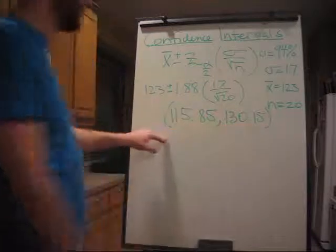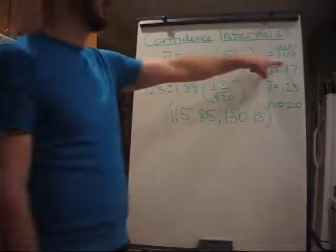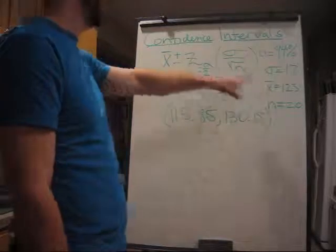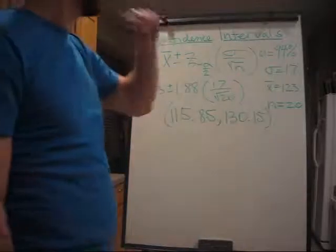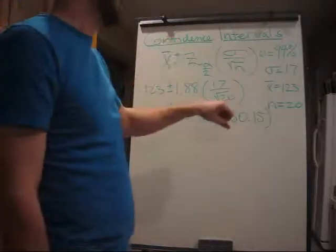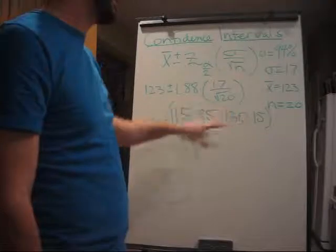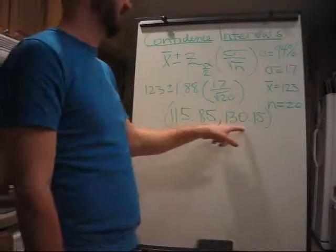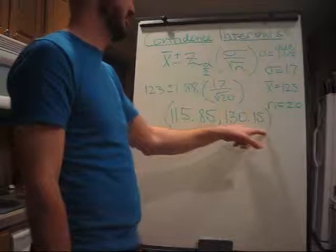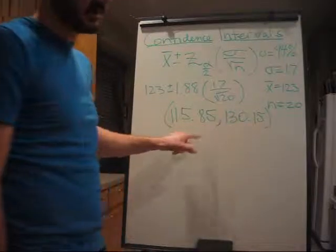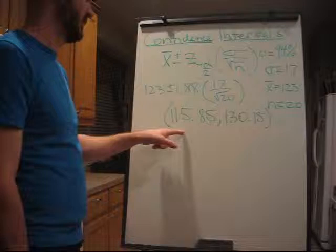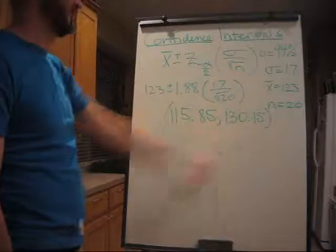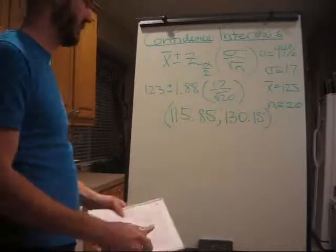That translates to, there is a 94% confidence level that the population mean lies in between 115.85 and 130.15. This is a confidence interval for the population mean, and we're 94% sure that it's in between these two numbers. So that's how that worked out.